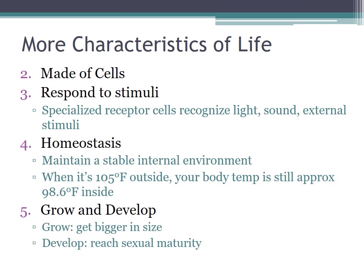The fifth characteristic is the ability to grow and develop, and those are two very different words. Growing is just the ability to get bigger in size, and at this point you are bigger than you were when you were born. Most of you have also developed — you've reached your sexual maturity and are capable of reproduction. However, when you think about little kids, they haven't developed yet. So it has to be both growth and development. That sexual maturity is important for organisms to have.